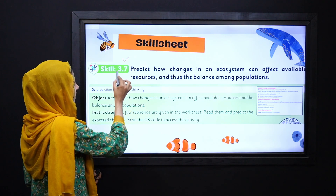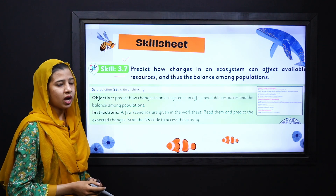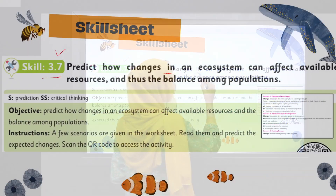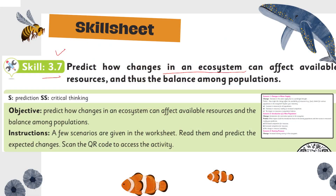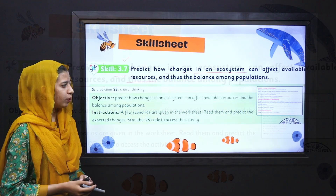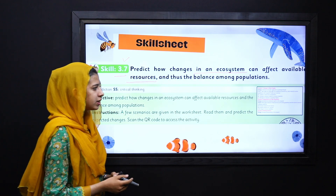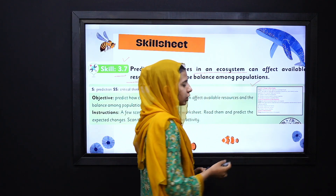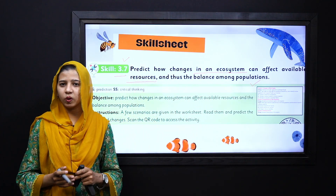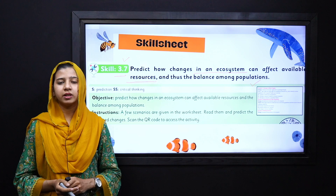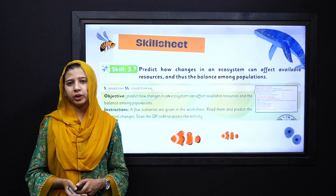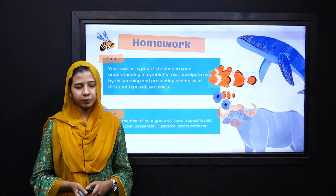Next, we move to our skill sheet, that is Skill 3.7, in which you have to predict how changes in an ecosystem can affect the available resources and balance among populations. Dear students, you can easily open this skill sheet by scanning the QR code, and the sheet is also available in the description of the video.